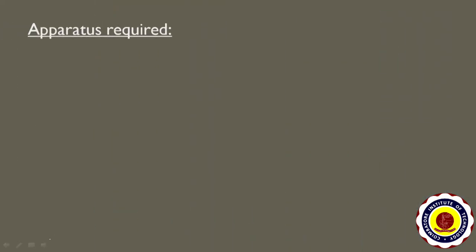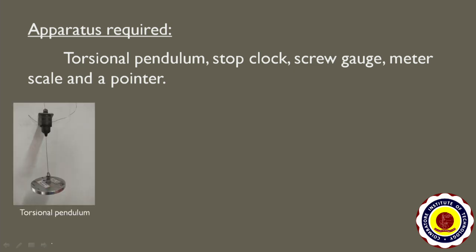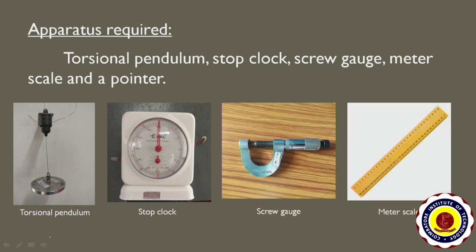Now let us see the apparatus required for this experiment: torsional pendulum, stop clock, screw gauge, meter scale and a pointer. This is the torsional pendulum, stop clock, screw gauge and a meter scale.